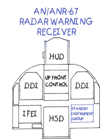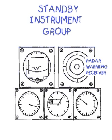The RWR, or Radar Warning Receiver, provides two methods of showing the pilot a picture of potentially hostile radar threats. These are not necessarily aircraft, but anything which has a radar pointed at your aircraft. The Radar Warning Receiver azimuth display is located in the Standby Instruments group.